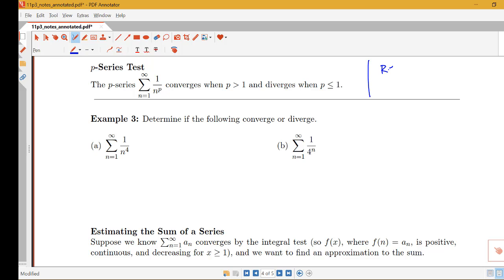This is of course related to the fact that we learned back in section 7.8 with improper integrals that the integral from 1 to infinity of 1 over x to the p dx converges for p greater than 1 and diverges for p less than or equal to 1.